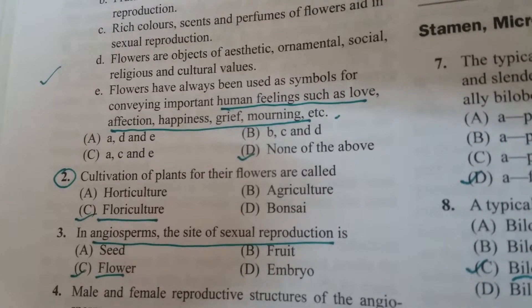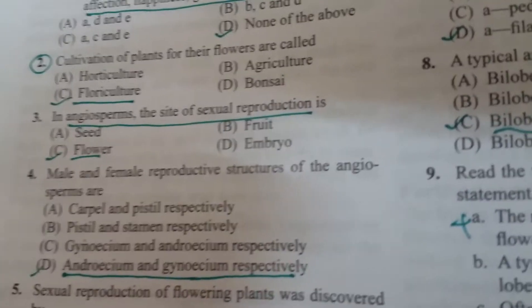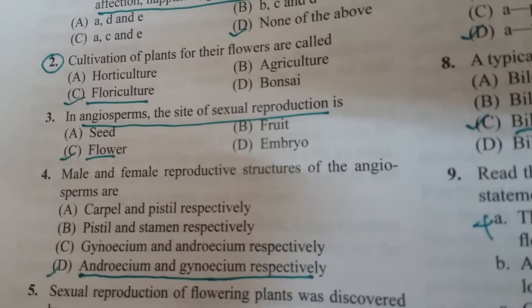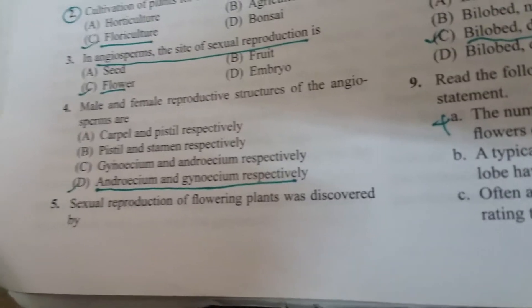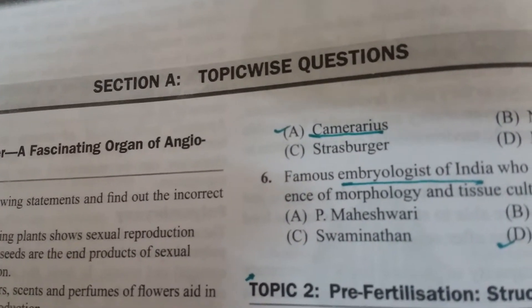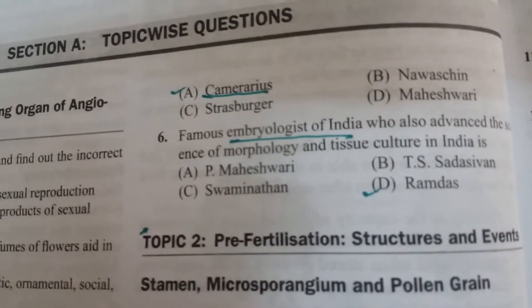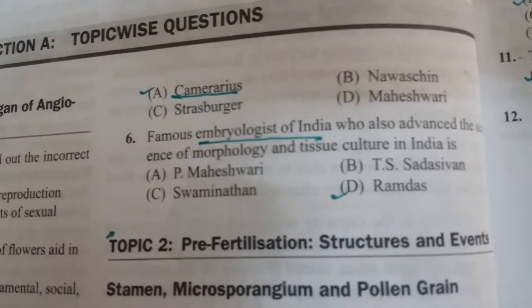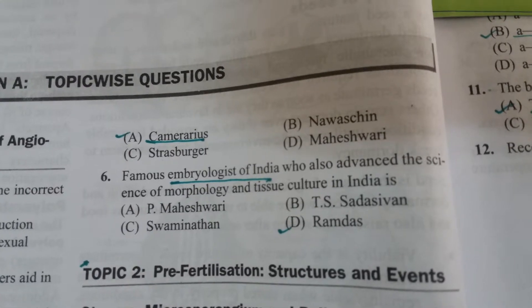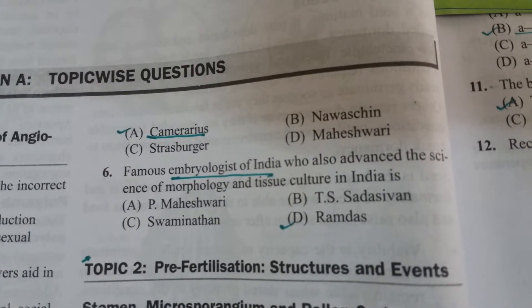In angiosperm, the site of sexual reproduction is the flower. The male and female reproductive structures of angiosperma are androecium and gynoecium respectively. Sexual reproduction in flowering plants was discovered by Camerarius. The famous embryologist of India, who also advanced the science of morphology and tissue culture in India, is Ramdas.